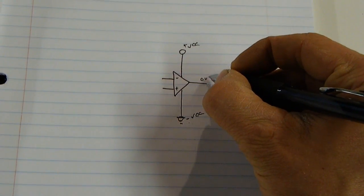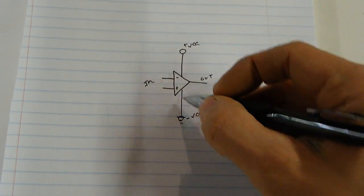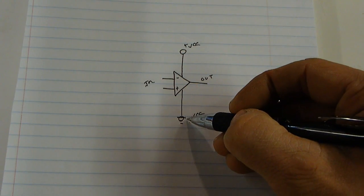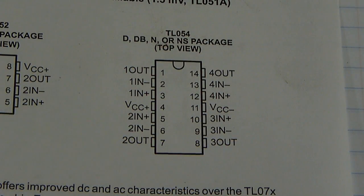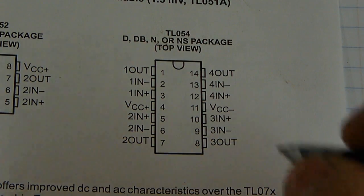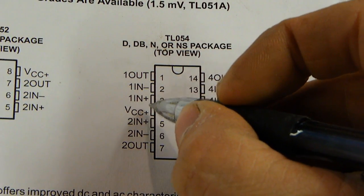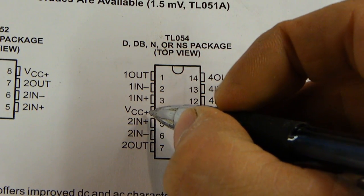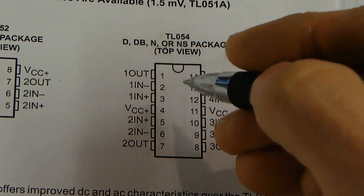So, this is your out, this is your in minus, in positive, battery minus, battery positive. So, if you look at this op-amp, the one that I'm using in this example, you have an in minus, in plus, a voltage plus, a voltage minus, and an out.